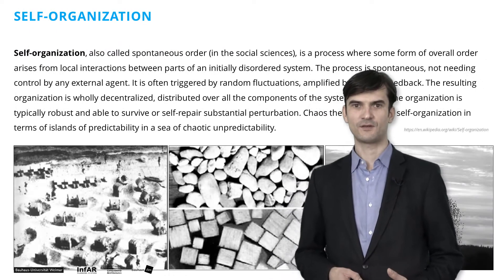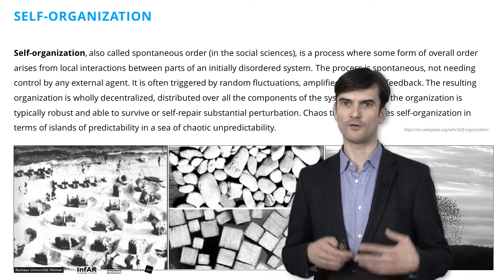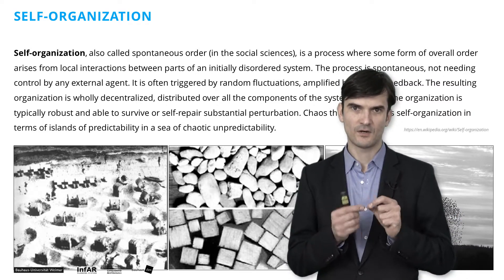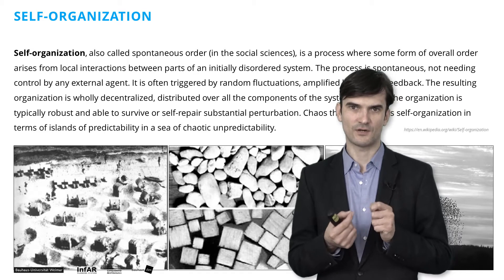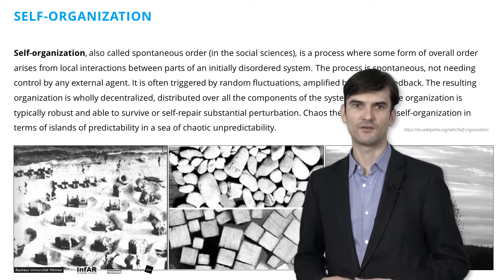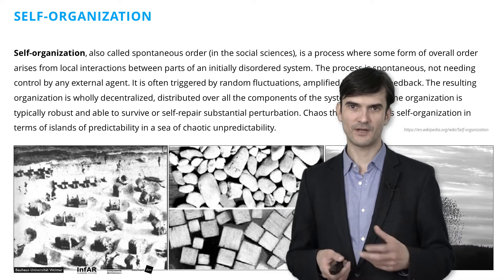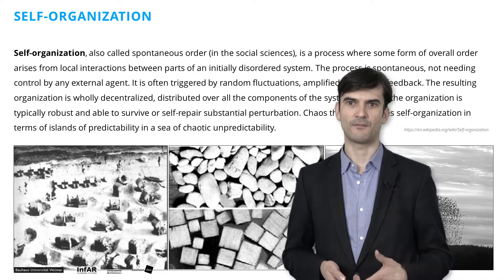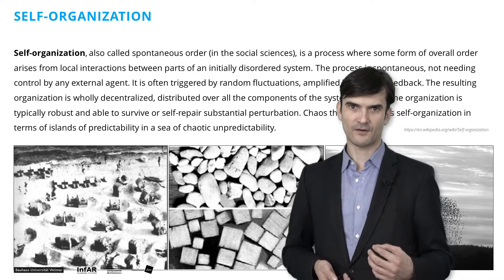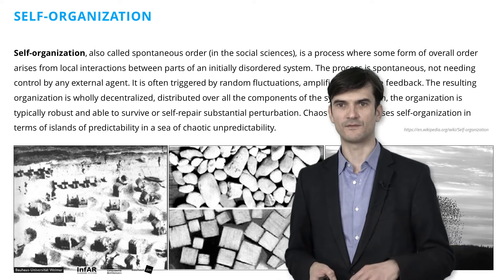Self-organization or spontaneous order is a process where some form of overall order arises from local interactions between parts of an initially disordered system. The process is spontaneous, not needing control by any external control instance. It is often triggered by random fluctuations amplified by positive feedback loops. The resulting organization is wholly decentralized, distributed over all the components of the system.